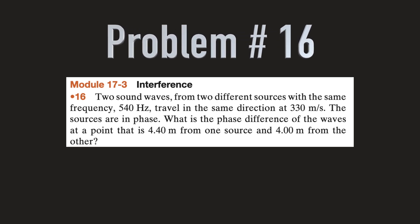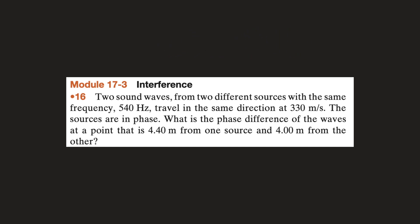Problem number 16: Two sound waves from two different sources with the same frequency, 540 Hertz, travel in the same direction at 330 meters per second. The sources are in phase. What is the phase difference of the waves at a point that is 4.4 meters from one source and 4 meters from the other?